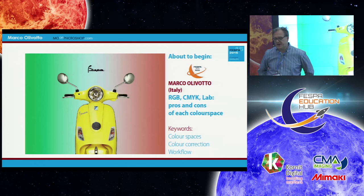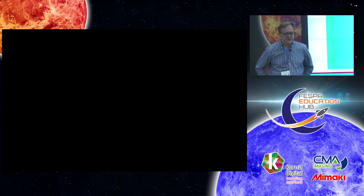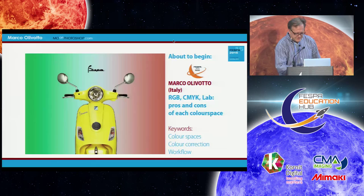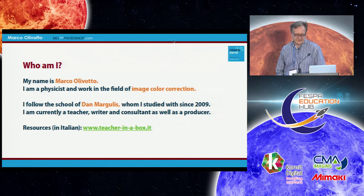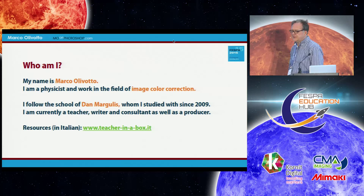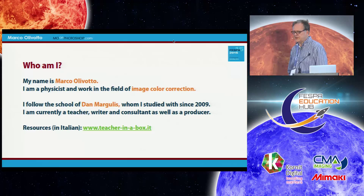You may be familiar with all three of them or maybe just one of them. But before we start, let me tell you who I am. My name is Marco Olivotto. I am a physicist, and I mainly work in the field of image color correction — static images, not movies. I've been a student with Dan Margulis, the man who invented color correction in Photoshop, for the last six years. I currently teach, write for different magazines, consult, and still produce images.